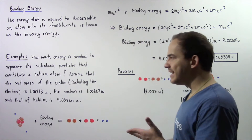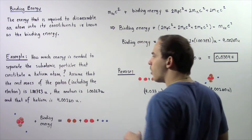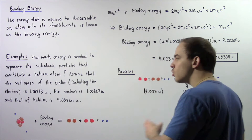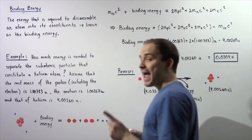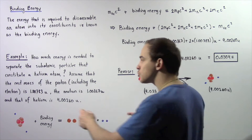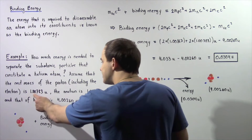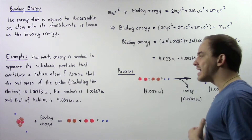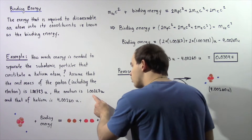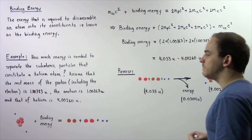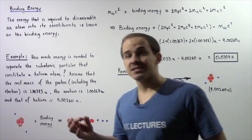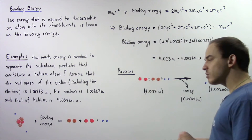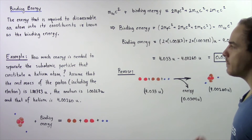How much energy is needed to separate the subatomic particles that constitute a helium atom? Assume that the rest mass energy of the proton and the electron is 1.00783 unified atomic mass units, the rest mass of the neutron is 1.00867 unified atomic mass units, and the rest mass of a complete helium atom is 4.00260 unified atomic mass units.